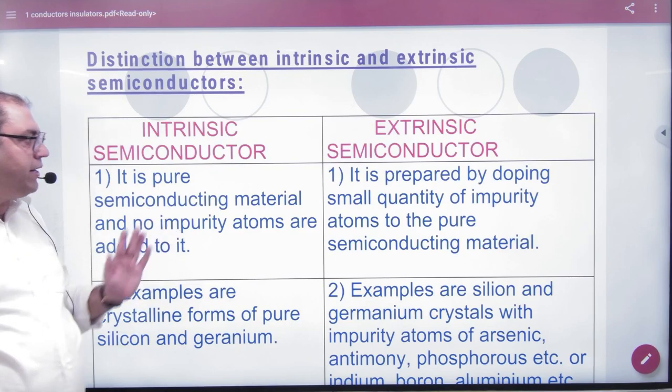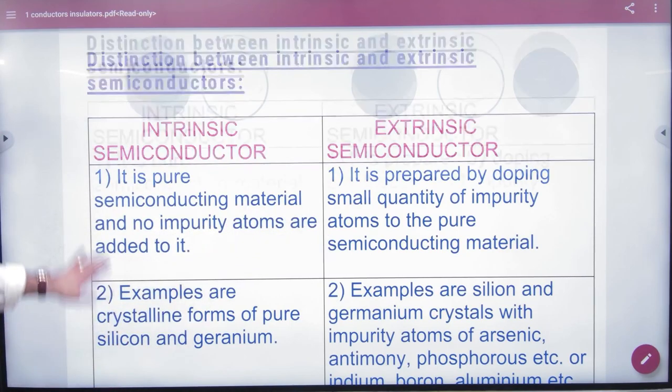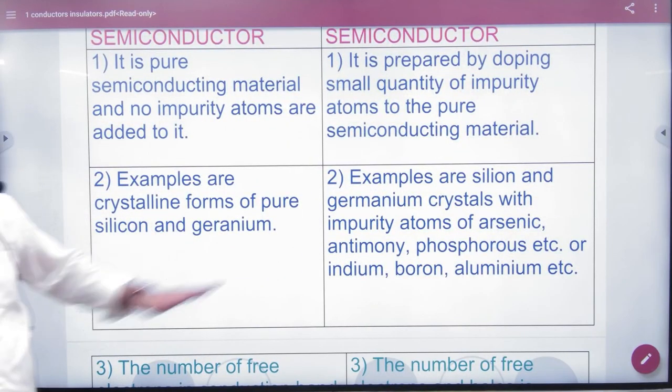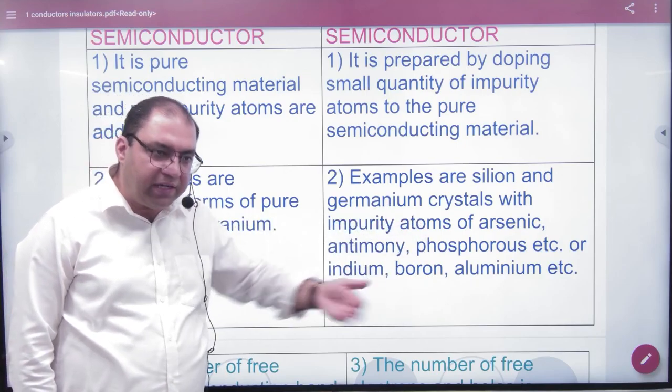Intrinsic semiconductors are pure. Extrinsic semiconductors involve doping. Examples of intrinsic are crystalline forms of pure silicon and germanium. Examples of extrinsic are silicon and germanium crystals with impurity atoms like trivalent or pentavalent dopants added.